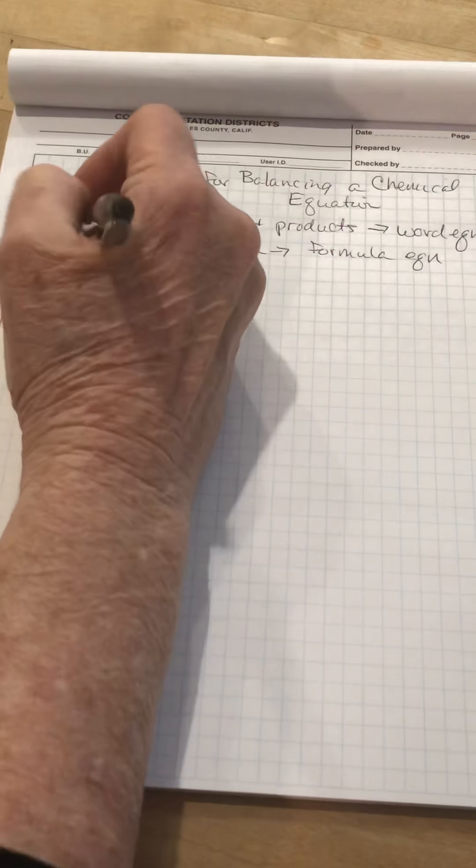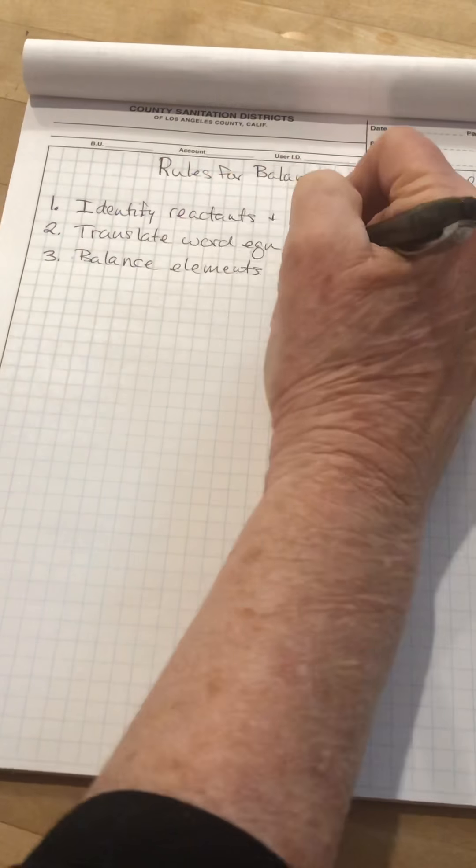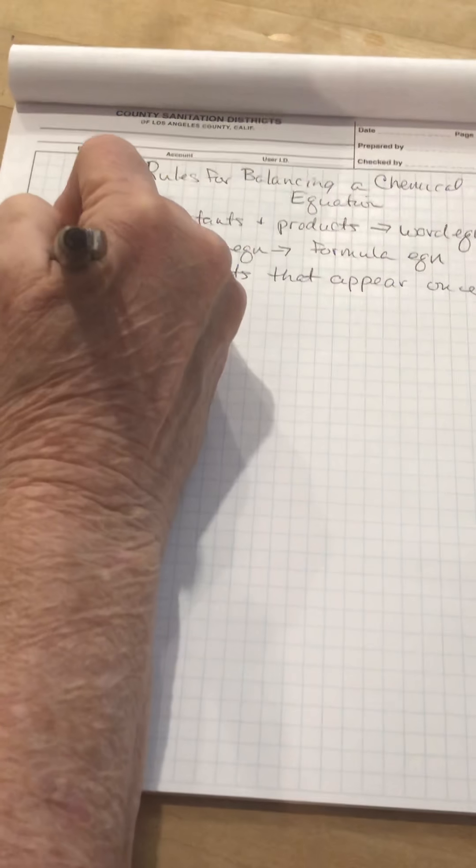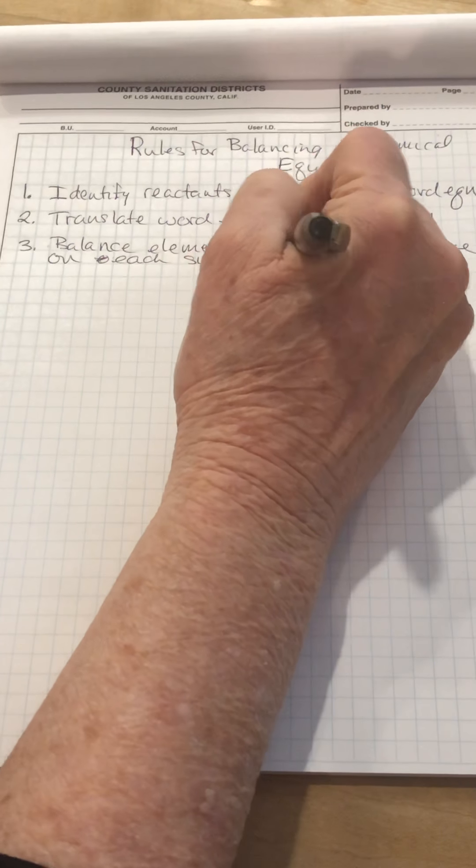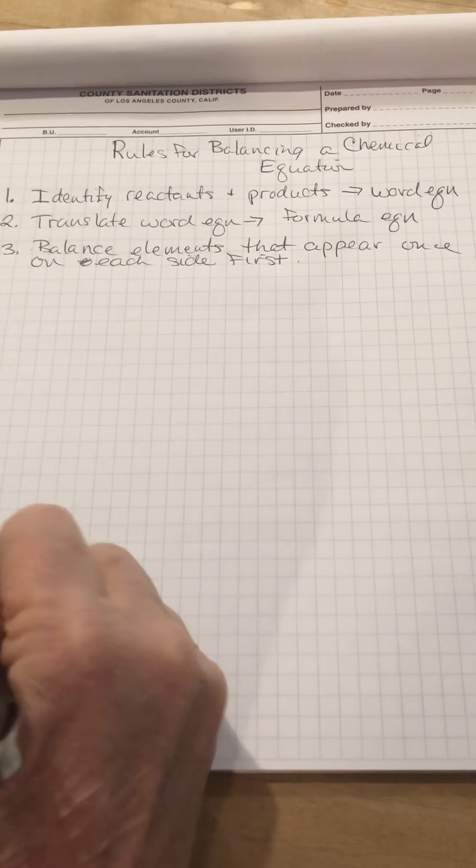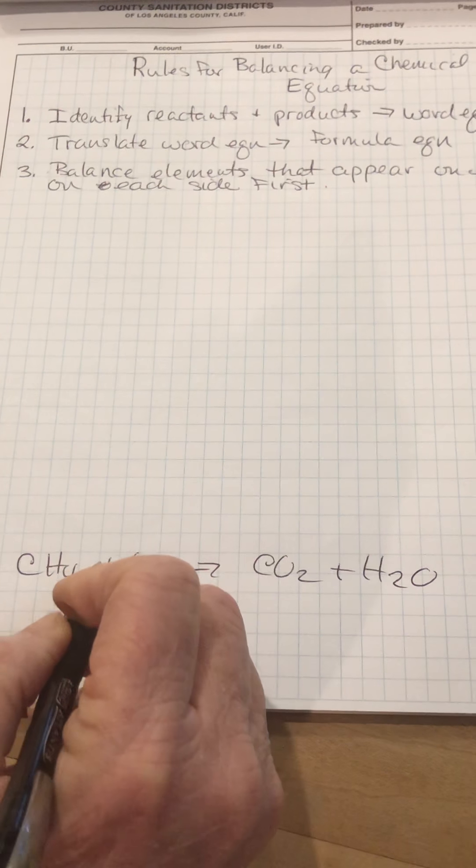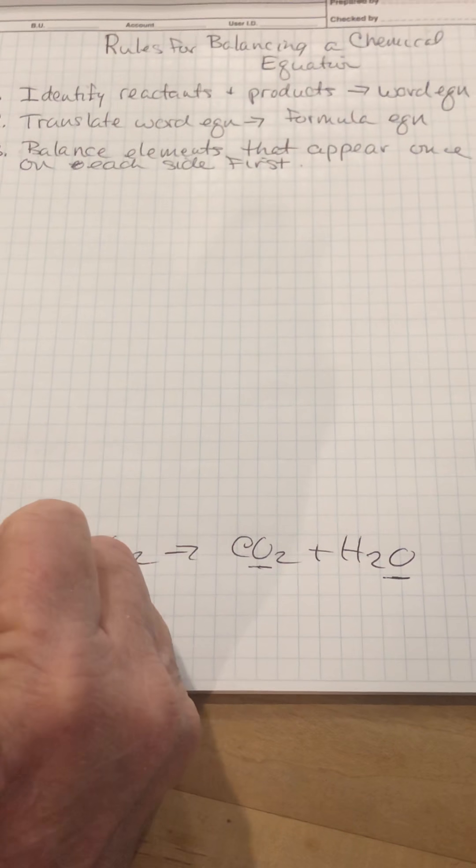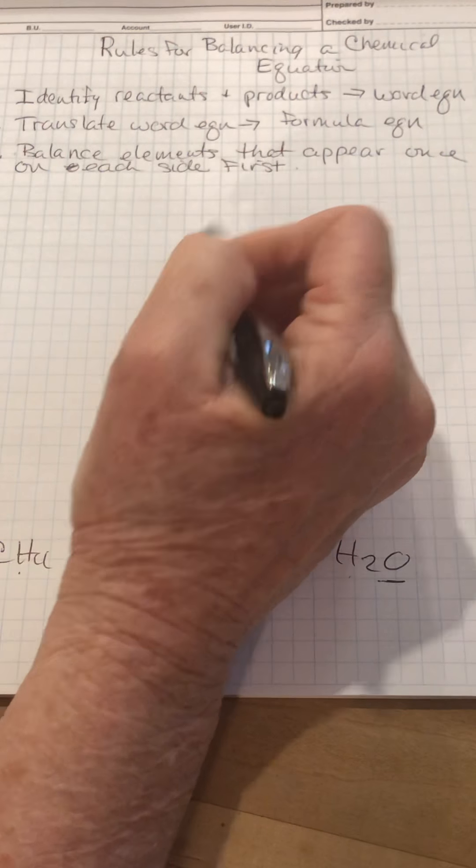Now assuming we have a correct formula equation, you're going to balance elements that appear once on each side first. In that last example I gave you, I'll just put it down here at the bottom, CH4 plus O2 gives you CO2 and water. O2 appears once on this side and it appears in two products on that side. We wouldn't mess with the O2. We'd start with C, which appears in one reactant and one product, and we start with H, which appears in one reactant and one product. So that's what this means, balancing elements that appear once on each side.